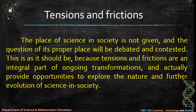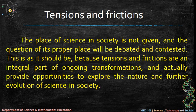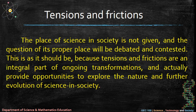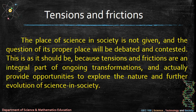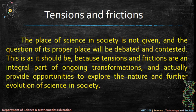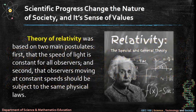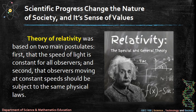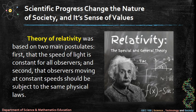Tensions and frictions: the place of science in society is not given, and the question of its proper place will be debated and contested. This is as it should be, because tensions and frictions are an integral part of ongoing transformations and actually provide opportunities to explore the nature and further evolution of science in society. Scientific progress changes the nature of society and its sense of values.